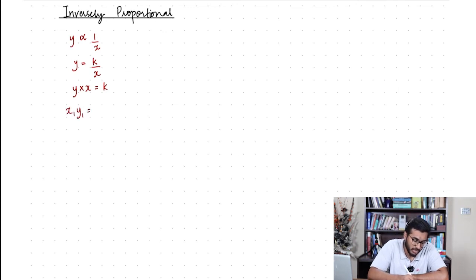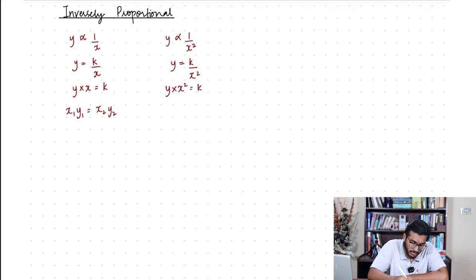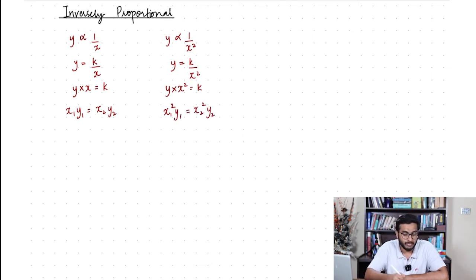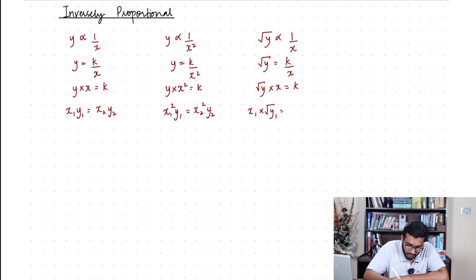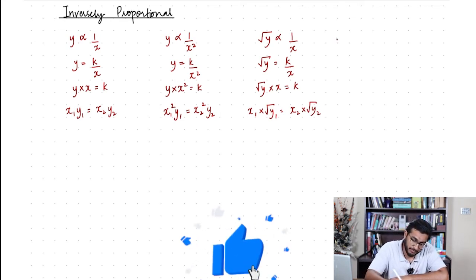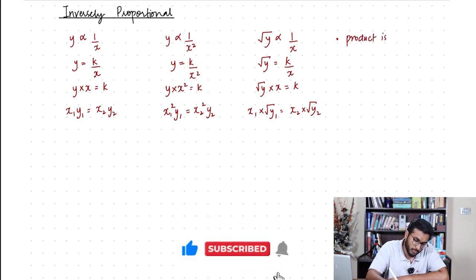So you can say x₁y₁ equals x₂y₂. Similarly, if y is inversely proportional to x², you remove the proportionality sign and add a constant, so the product of y and x² is always going to be constant: x₁²y₁ equals x₂²y₂. You can do a similar relationship if √y is inversely proportional to x: x₁ times √y₁ equals x₂ times √y₂. So whenever two quantities are inversely proportional, their product will always be the same.